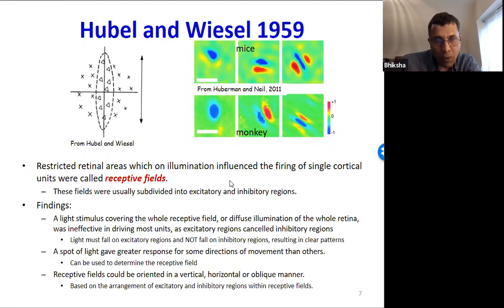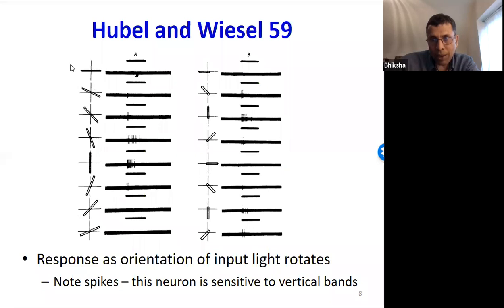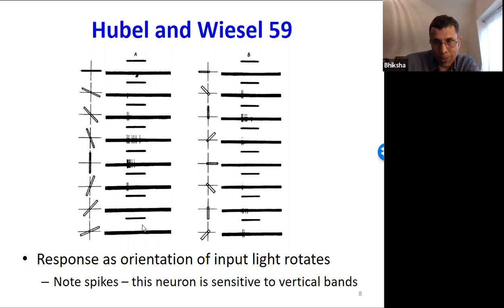Here is one of their results from the paper. The bar on the left shows the orientation of light shown to the eye — a dot moving around. The longer the bar of tick marks, the greater the response. For this particular neuron, when the light is perfectly horizontal there is no response; as it rotates toward vertical, there is maximum response; as it rotates back out, the response disappears. This neuron is responsive only to vertical bars of light.